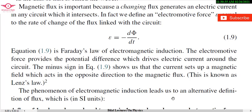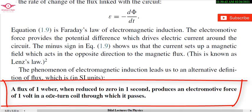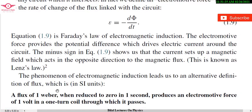The formula of electromagnetic induction leads us to the definition of flux units. In SI units, one Weber is defined as: when one Weber of flux is reduced to zero in one second, it produces an electromotive force of one volt. That one volt drives current of one ampere through the coil, producing a potential difference of one volt per second. This is the definition of one Weber.